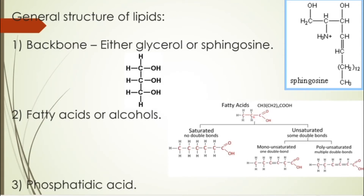Unsaturated fatty acids can be monounsaturated or polyunsaturated, meaning one double bond or multiple. For one double bond you can say, for example, butanoic acid. For more than one double bond you can speak about linoleic acid, which has three double bonds.